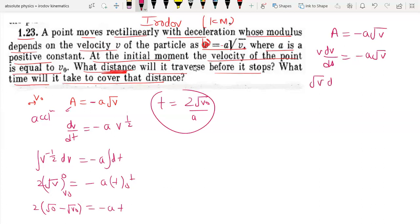So this is root V dV equal to minus A dS. Both sides integrate, so V power 3 by 2 upon 3 by 2 equal to minus A S. Taking limits from V0 to 0, so this is 2 by 3, under root 0 minus V0 to 3 by 2, equal to minus A S.